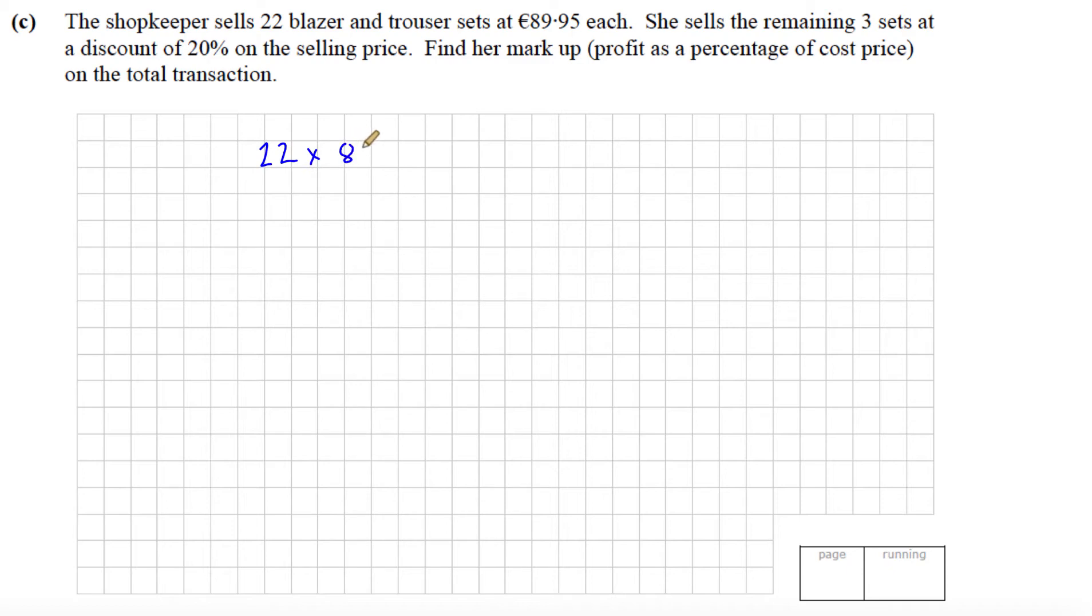22 times 89.95 gives us 1979.90. Then she sells the remaining three sets at a discount of 20% off this price. Well, 20% from 100 leaves 80%, so we want to find 80% of 89.95.